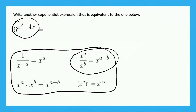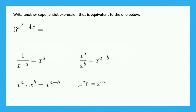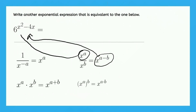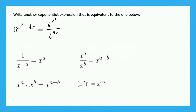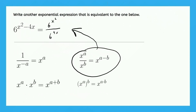x to the power of a over x to the power of b equals x to the power of a minus b. So, the easiest way to answer this would be instead of writing x to the power of a minus b, like we have right here, we could write this as a fraction with x to the a on top, which corresponds to 6 to the x squared, and x to the b on bottom, which corresponds to 6 to the power of 4x. So, according to this property, we can now see that the two expressions right here are, in fact, equivalent.